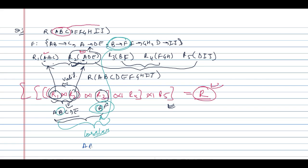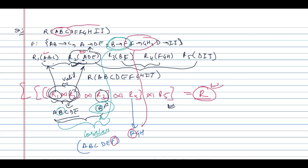After combining we get attributes A, B, C, D, E, F. Now joining with R4(F, G, H): F is the common attribute. From the functional dependency F determines GH, F is a key attribute in R4, therefore this decomposition is also lossless.